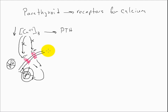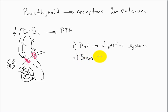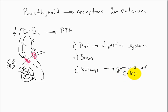What's interesting then is what happens after PTH is released. There are really three places we can get calcium: it can come from our diet, impacting the digestive system; it can come from the bones, which are great storage for calcium — we can break down bone if we need to release calcium; and our kidneys also play a role — if there's too much calcium, the kidneys will simply excrete it in the urine.